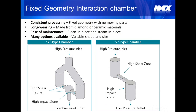Here are two different styles of interaction chambers that are available. The one on the left is a Y-type interaction chamber, ideal for processing emulsions and liquid-only formulations. The one on the right is a Z-type interaction chamber, ideal for formulations that contain solids. Both styles are made out of very wear-resistant materials, such as polycrystalline diamond.